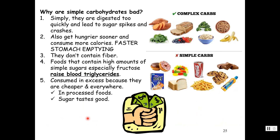Why are simple carbohydrates bad? They're already in their monomer unit, so they get absorbed rather quickly, which leads to blood sugar spikes and then crashes. Because homeostasis is like a man walking a tightrope, the body can overshoot the set point. Simple sugars also move through the stomach fastest, so you get hungrier sooner and consume more calories overall. They don't contain any fiber, which is necessary for roughage. Foods high in simple sugars — especially high fructose corn syrup — raise blood triglyceride levels, which are linked to cardiovascular disease.